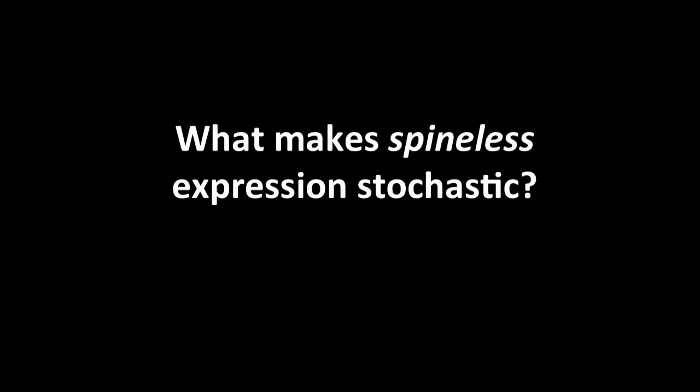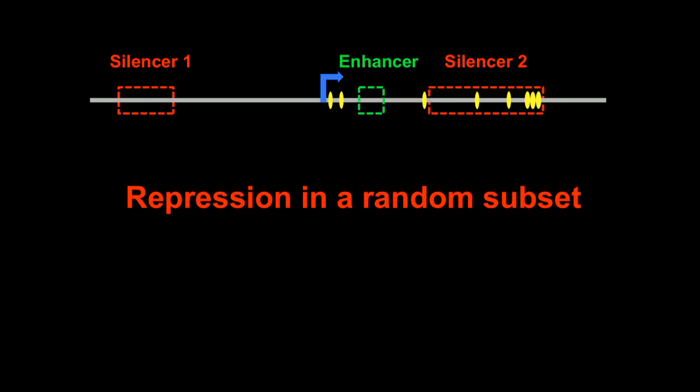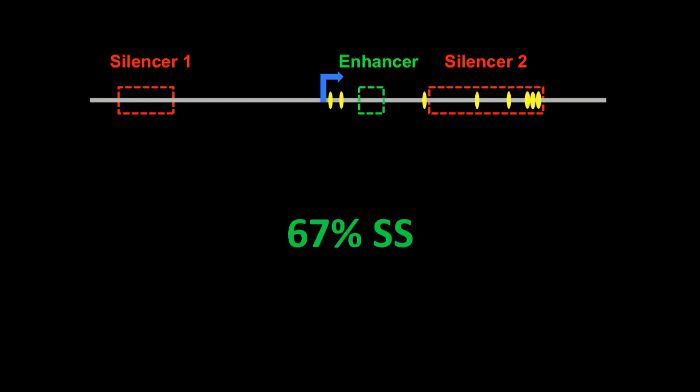So our lab is interested in asking what makes spineless expression stochastic. If we look at what's known about the locus, we know there's an enhancer that drives expression in every R7 cell, as well as two silencer elements that are required to repress spineless in a random subset of R7s. With all of these elements together, we get 67% spineless in our wild type or lab stock.